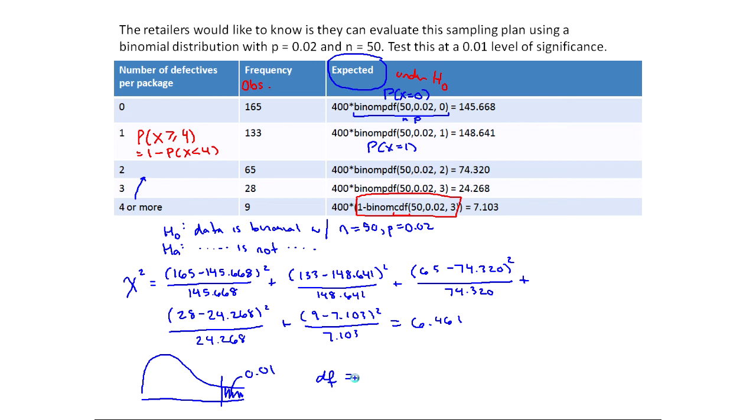And now what are my degrees of freedom? It's always the number of groups. So in this case, 1, 2, 3, 4, 5 groups minus 1. So we got 4 for my degrees of freedom. If you look this up on the table, you end up with 13.2767.